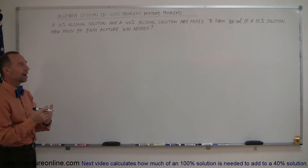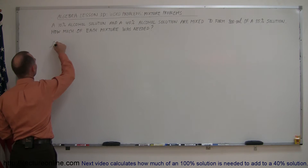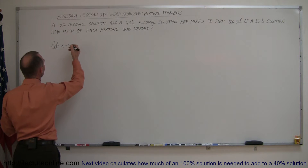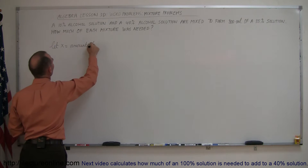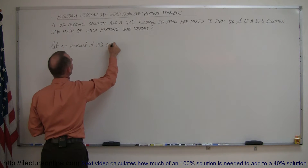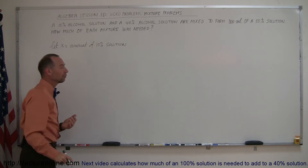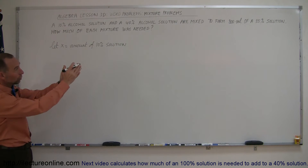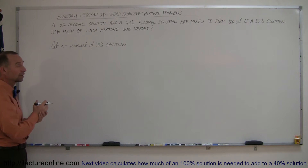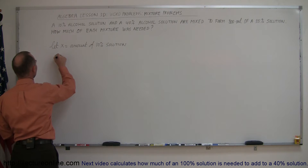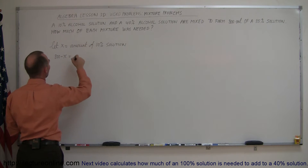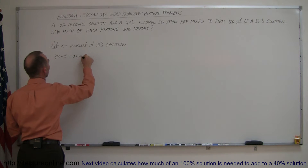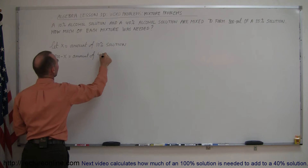First, we define the amount of each solution in terms of x. Let x equal the amount of the 10% solution. So if we used x amount of 10% solution, then the total — 800 milliliters minus x — is the amount we used of the other solution. So 800 minus x equals the amount of the 40% solution.